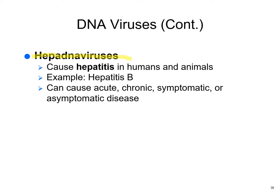Hepadnaviruses — Hepatitis B is a good example — cause liver failure. It can cause acute disease, chronic disease, or asymptomatic disease. If you're in the healthcare field, you really need to be vaccinated — it's probably mandatory — because it is a blood-borne disease. If you get a needle stick, you're more likely to get hepatitis B than you are to get AIDS.